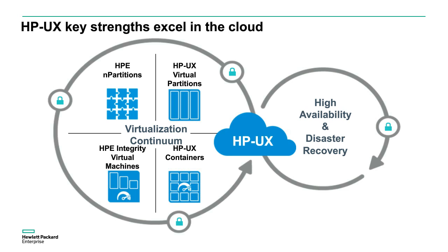HP Unix already had strengths in its virtualization capabilities. Over the decades, virtualization in HP Unix has matured — using N-parts, virtual partitions or V-parts, integrated virtual machines, or containers. These are the varied range of virtualization options available to HP Unix users, and combined with Service Guard, Instant Capacity, and various system management tools, you have a fully integrated solution. The point is that HP Unix was always ready for the cloud. OpenStack for HP Unix has now given us a platform to move to a private cloud paradigm in a true open-source manner.